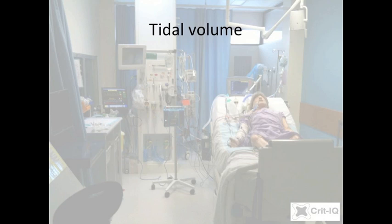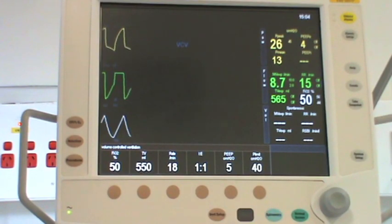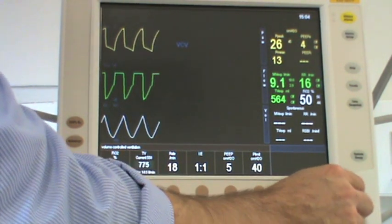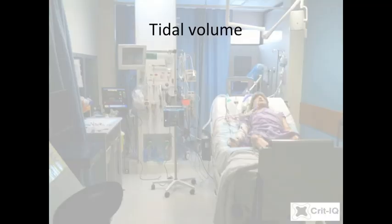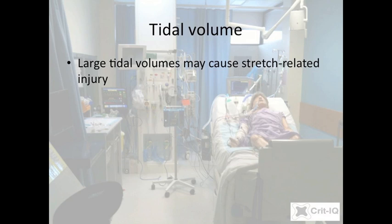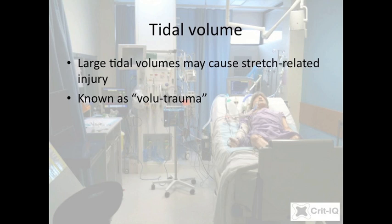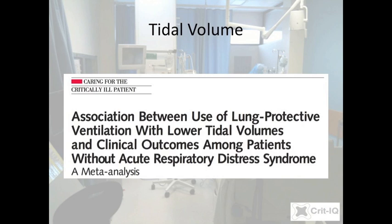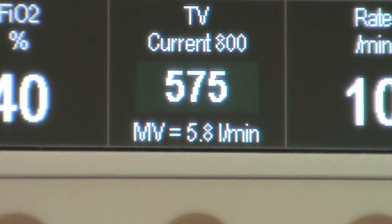Traditional ventilation practices were largely based on anaesthetics, with larger tidal volumes of 10 to 12 mls per kilo of ideal body weight commonly used to reduce collapse of dependent lung areas. In recent years, it has become apparent that large tidal volumes may result in over-stretching of the alveoli, causing damage referred to as volume trauma. Studies in patients with acute respiratory distress syndrome, or ARDS, have demonstrated that limiting volumes to less than 7 mls per kilo can improve outcomes, and recent meta-analyses suggest this has become a widely practiced standard of care.